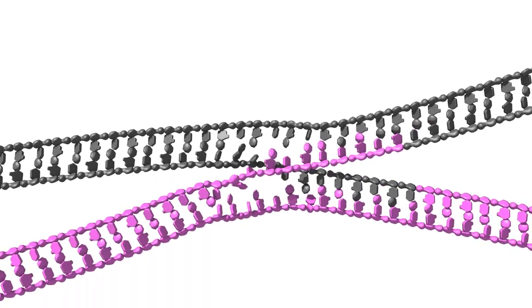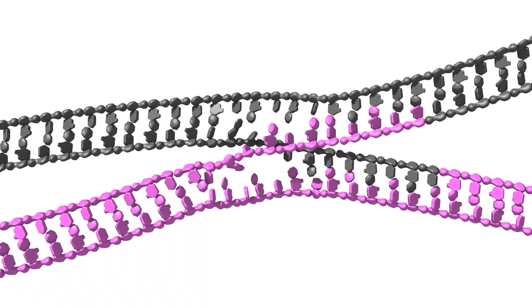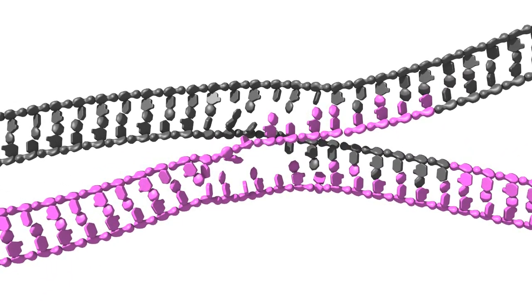In a Holliday junction, two homologous duplexes are linked by the reciprocal exchange of a pair of DNA strands.